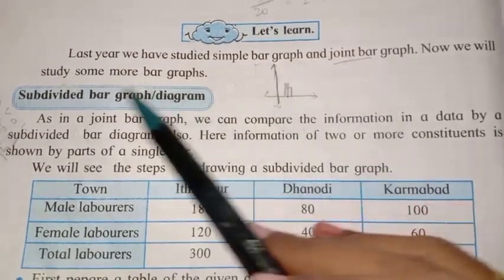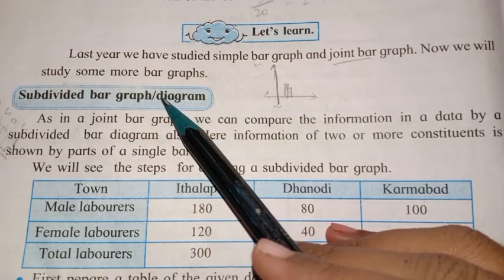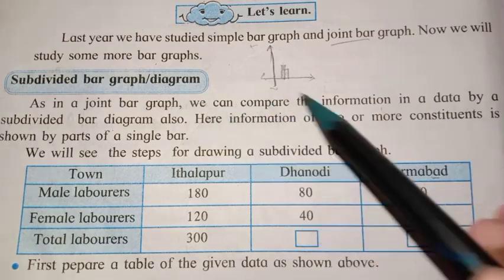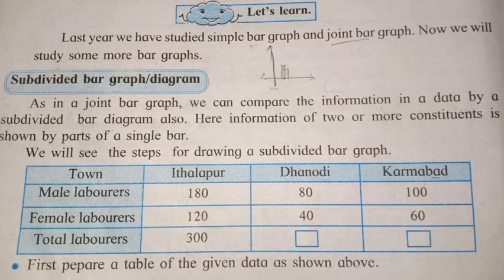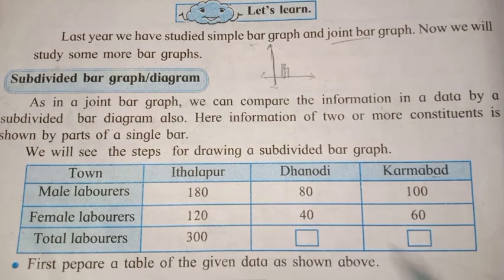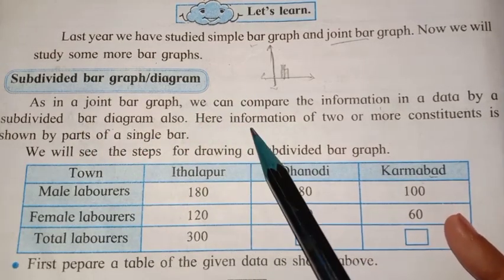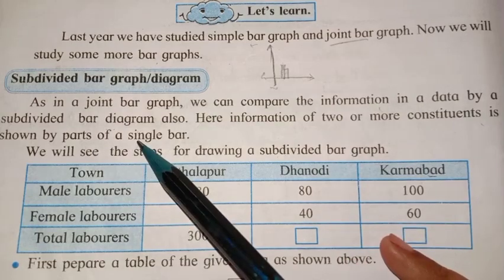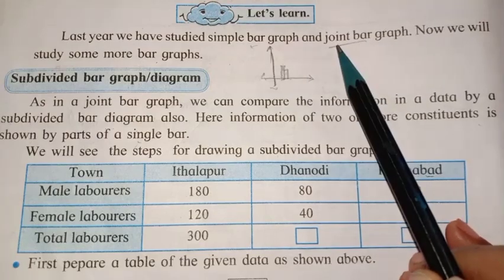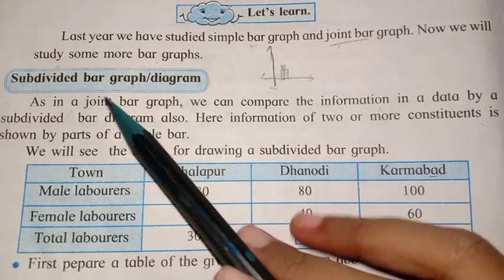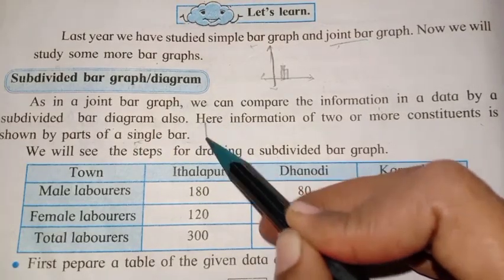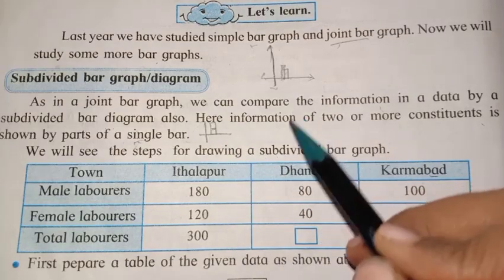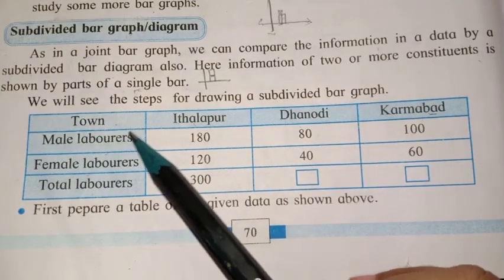This year you will study a new topic: subdivided bar graph or diagram. What is a subdivided bar graph? As in a joint bar graph, in a subdivided bar graph we can also compare information in data. In a subdivided bar diagram, information of two or more constituents is given, and that information we have to show in a single bar. In a joint bar graph, two small bars are drawn. But in a subdivided bar graph, only one bar is there and in that we have to show all information. Let's study this.